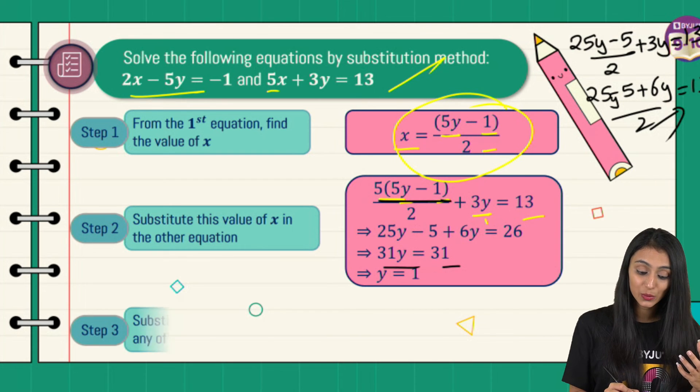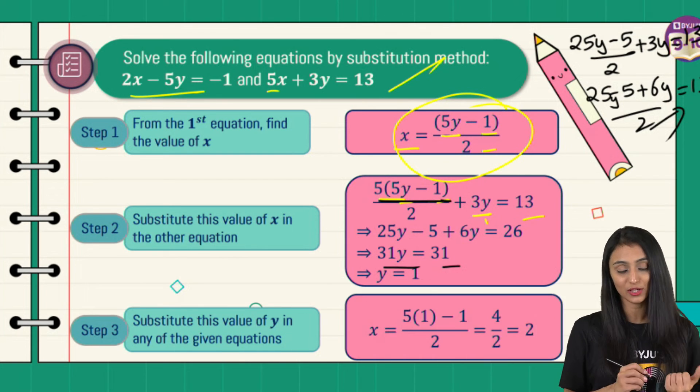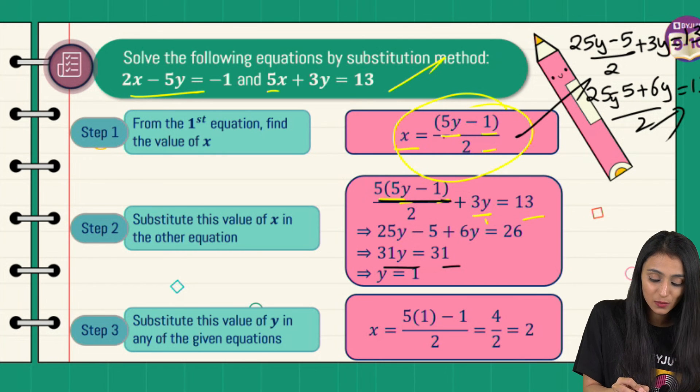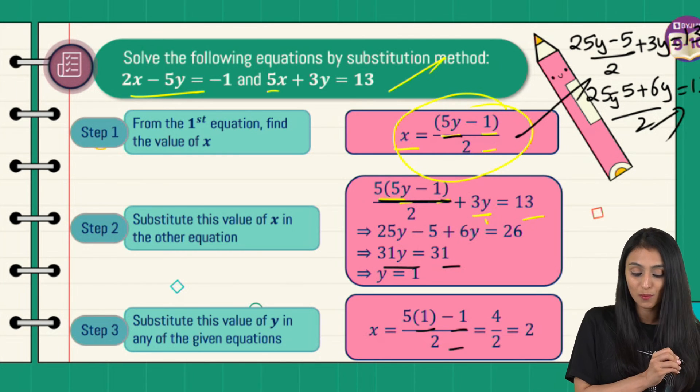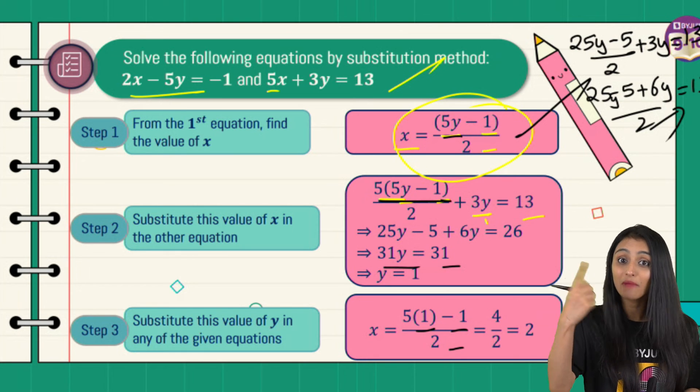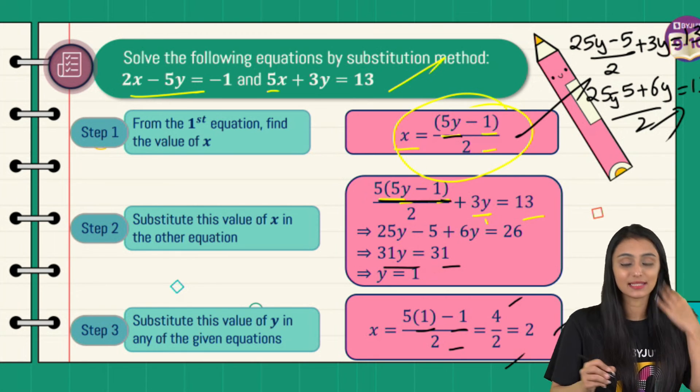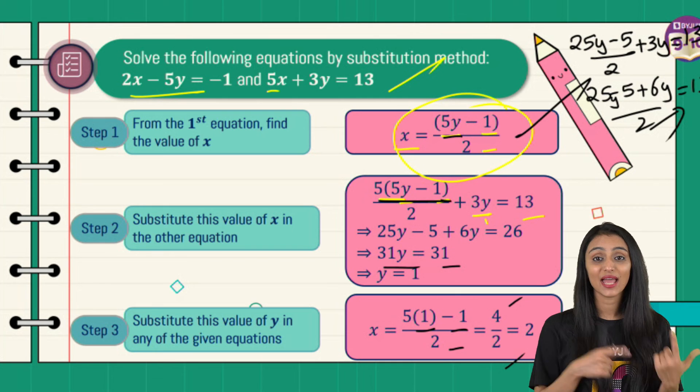Now let's substitute this in the other equations to get the value of x. Let's suppose I'm using this equation. So I have x equals 5 times 1 minus 1 upon 2, that's 5 minus 1 upon 2, which is 4 by 2, that equals 2. So I've got the value of x as well as y.